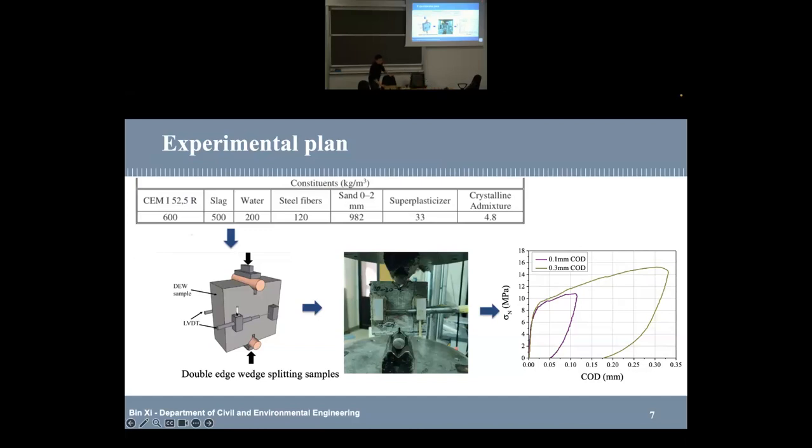So firstly, we should do the pre-crack test. After this loading, we set two kinds of cracks with 0.1 mm and 0.3 mm. And this LVDT is attached to the surface of the specimen and we record crack opening displacement. After it achieves our target crack opening displacement, we will make our testing machine go down and we create two kinds of crack width.